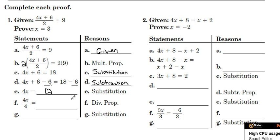And then it looks like we are applying the division property over here. We're going to divide both sides of the equation by 4. Divide by 4 on this side. Divide by 4 on that side. Substitution.